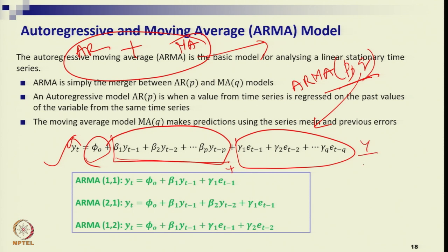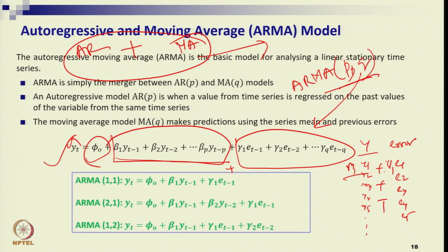If you have data Y1, Y2, Y3, Y4, Y5 and corresponding errors error1, error2, error3, error4, error5, you take their weighted combination — say beta1 and gamma1 — along with a coefficient phi0. This weighted combination forms your ARMA process.